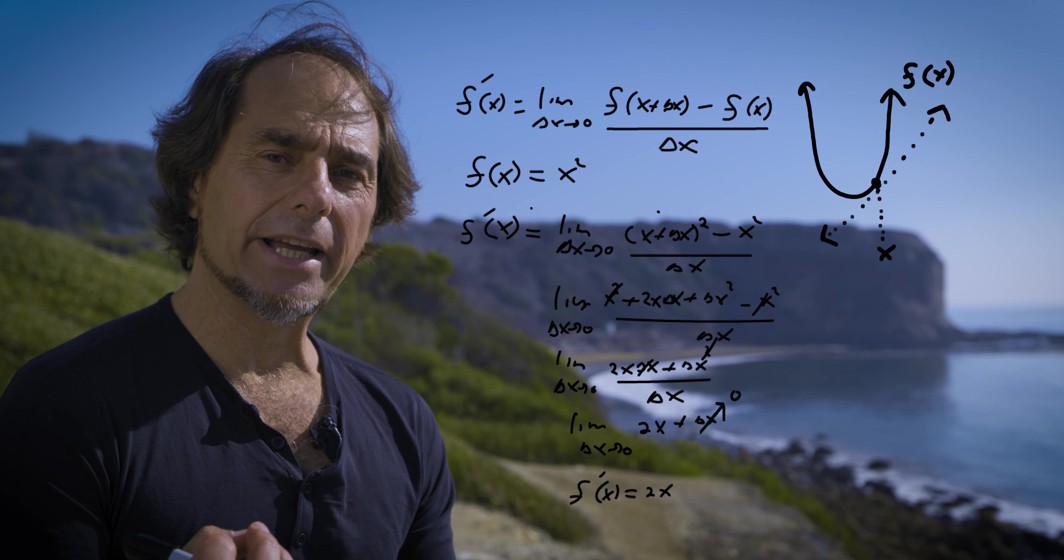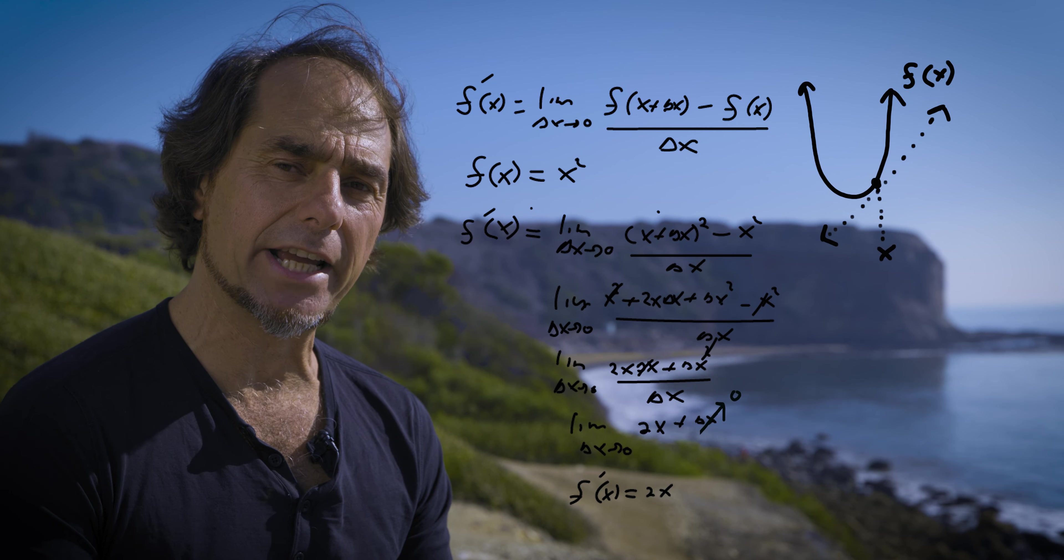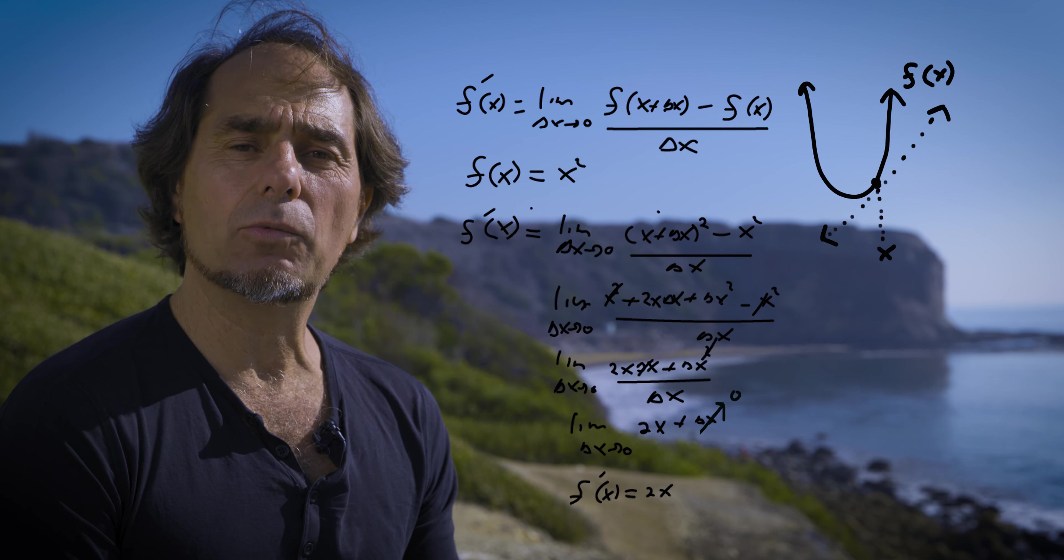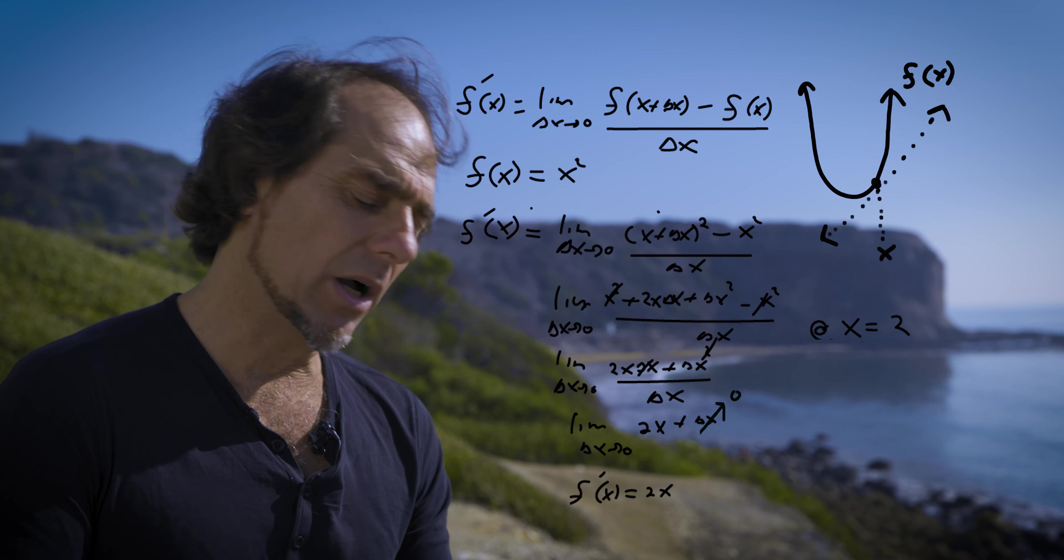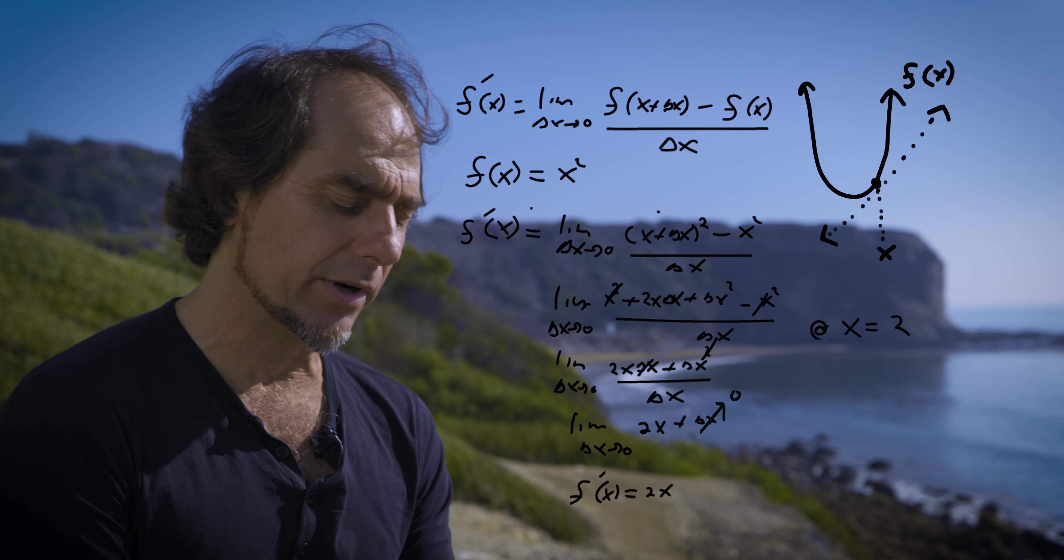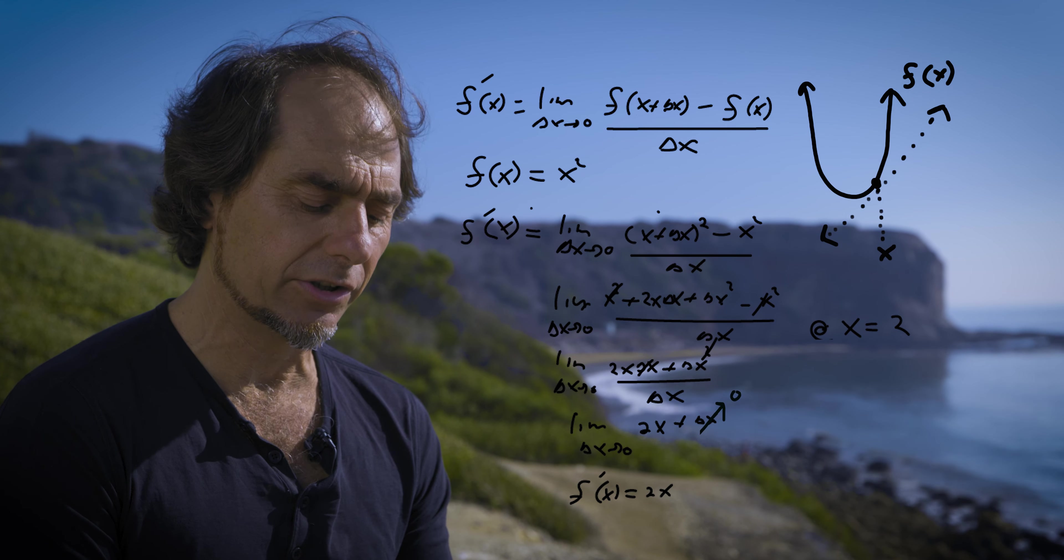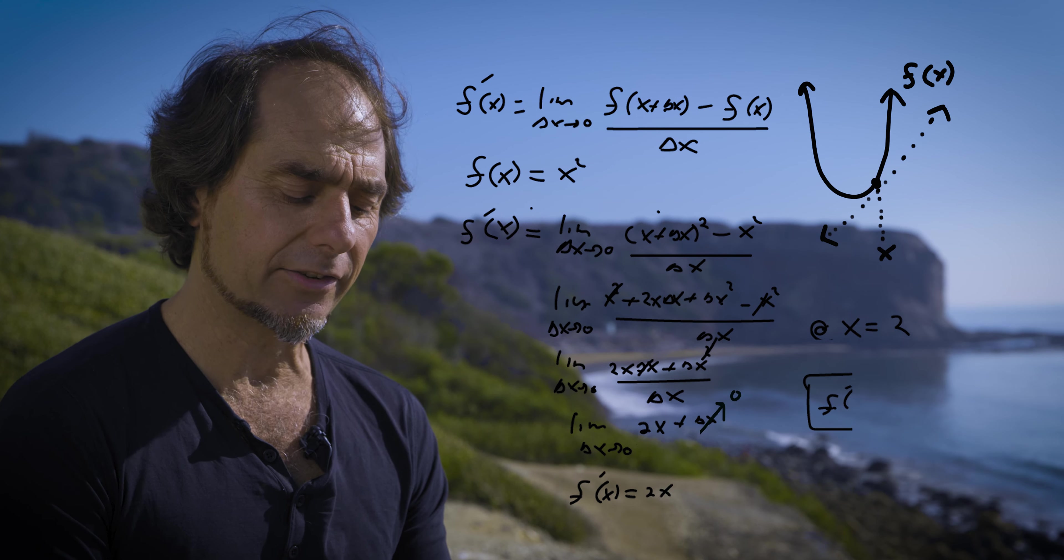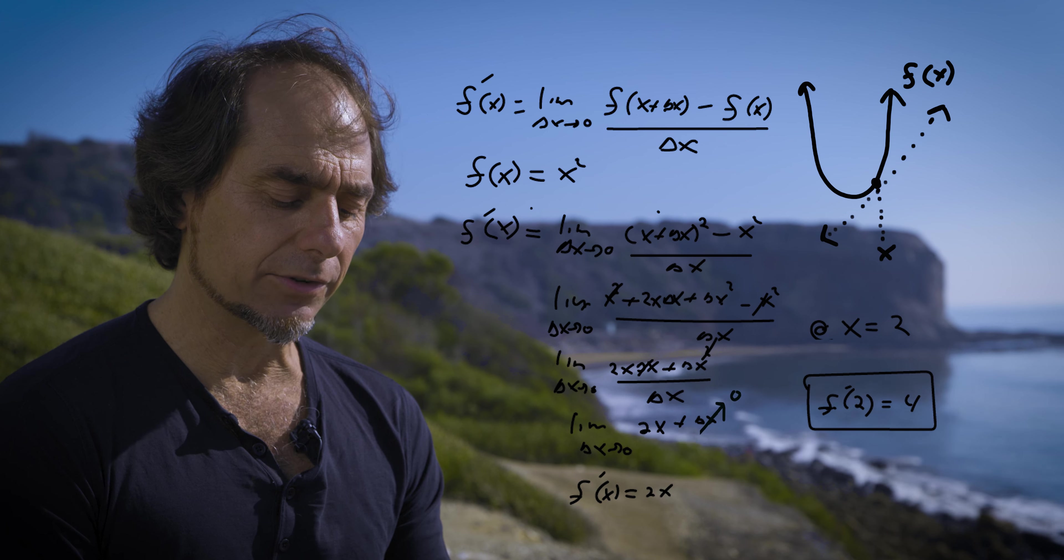Now let's evaluate that at a particular point and find the instantaneous rate of change. So let's do it at when x is equal to 2, what is the instantaneous rate of change of that point? Well, we just evaluate the derivative at that point. f prime evaluated at x equals 2 is equal to 2 times 2 for x is equal to 4. So our f prime of 2 is equal to 4.